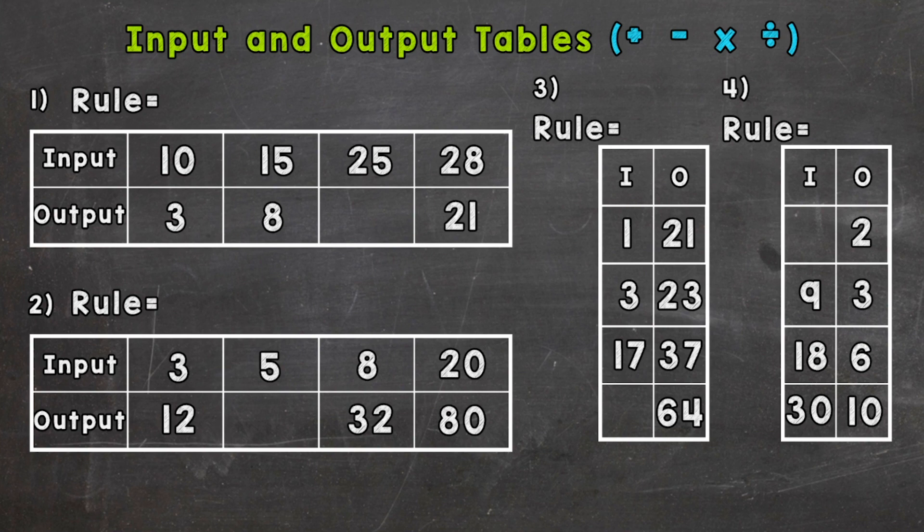Let's jump right into number one where we have inputs of 10, 15, 25, and 28. The first thing we need to do is determine the rule. What are we doing to the inputs to get the corresponding or matching outputs? For example, how do we get 10 to equal 3, 15 to equal 8, and 28 to equal 21?